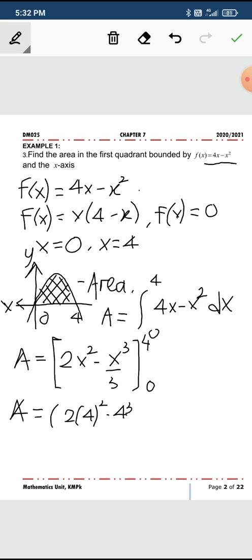You get 2 times 4 squared minus 4 cubed over 3, and then this is just going to be 0. As you simplify this, the value will be 32 over 3, and do not forget to add your unit squared.